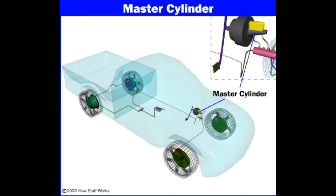Third, the piston: instead of one piston, two pistons — a primary piston and a secondary piston — are used in a tandem MC. The actuation of the secondary piston occurs after completion of the primary piston movement. The primary piston is connected to the brake pedal, and the secondary piston is placed just behind the returning spring of the primary piston.